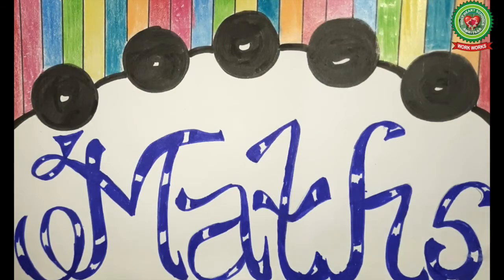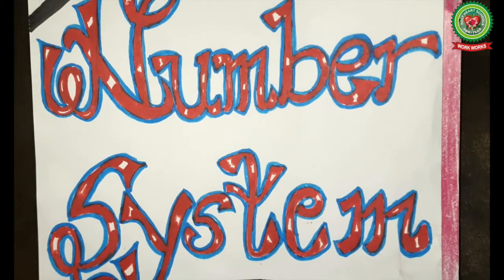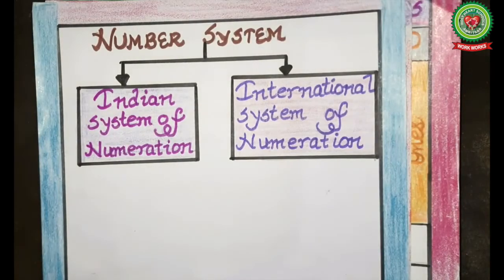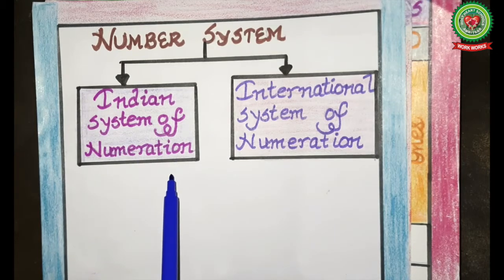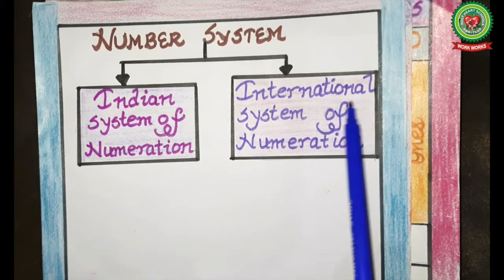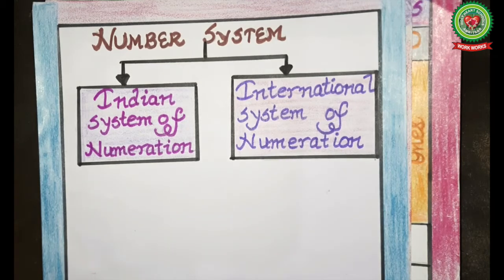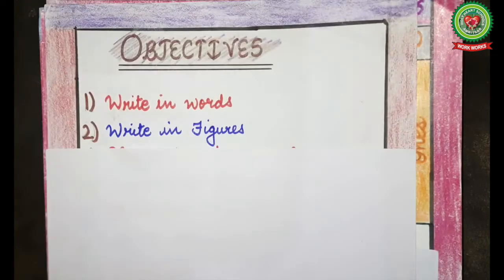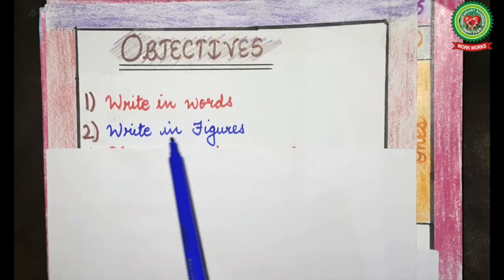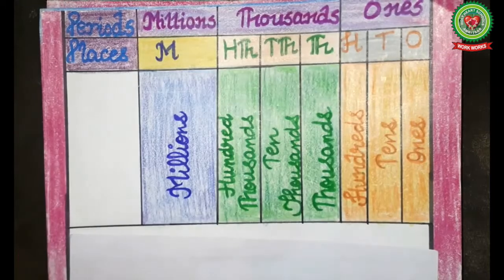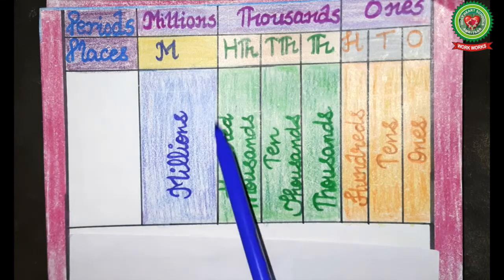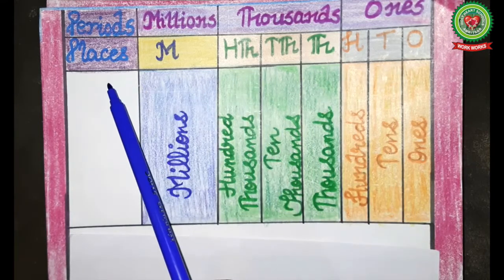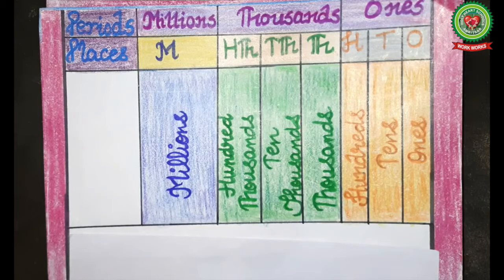Hello students, welcome to the maths class. In chapter Number System, we have already done the Indian system of numeration. Today I will discuss with you the international system of numeration. The objectives are to write in words and write in figures. To read and write large numbers, we use the international place value chart.